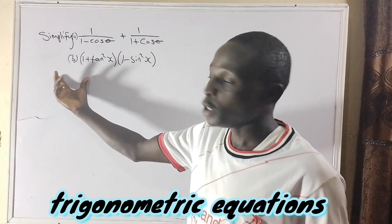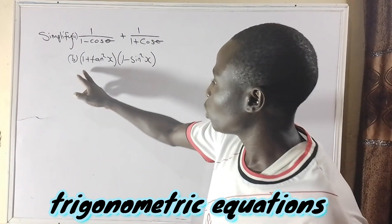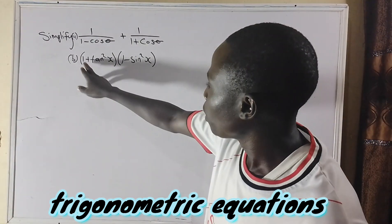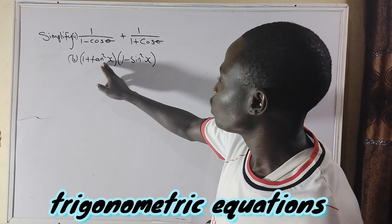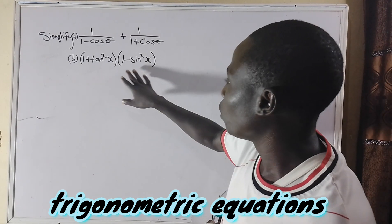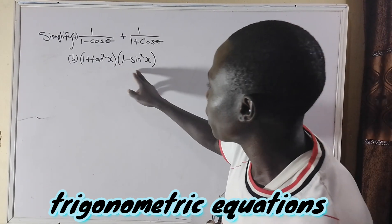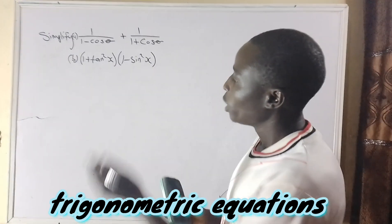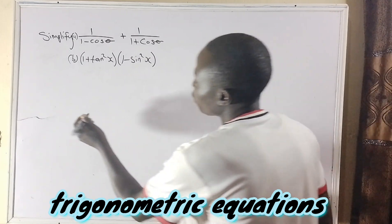The second one, part b, asks us to simplify 1 plus tan squared x, multiplied by 1 minus sin squared x. So let's start from the first.